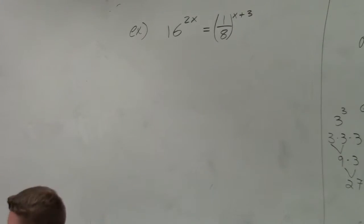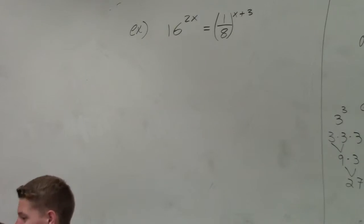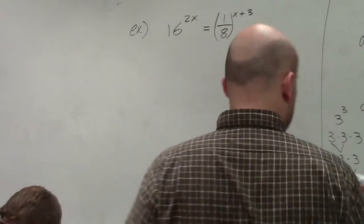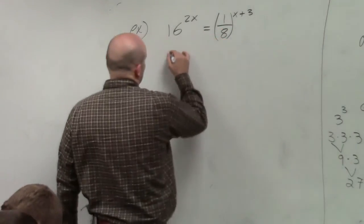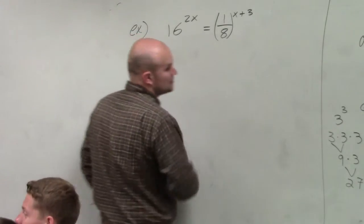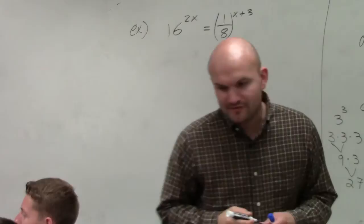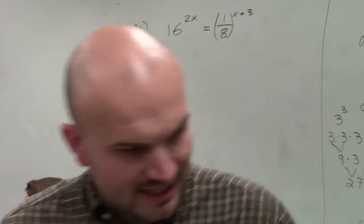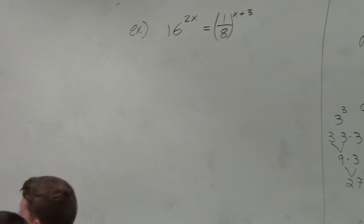You're going to want to use base 2. So you're going to want to rewrite 16 and 8 to the negative 1st power as... So try to use it as base 2. See if you guys can use 16 over there as base 2. 16 and 8. Meaning your exponents are going to be base 2. Meaning 2 raised to a power.